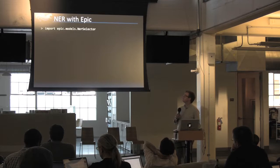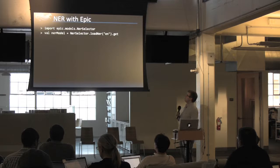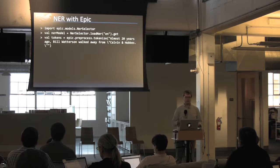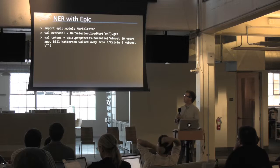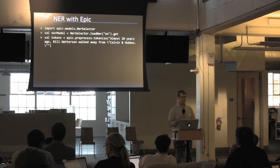First, you just import the NER selector tool, which is designed to let you select between multiple different languages. You can load the English model with just a simple line. You can then take some text and tokenize it into a representation that we understand. So for something like 'almost 20 years ago, Bill Watterson walked away from Calvin and Hobbes,' it converts the input string into a canonical representation, separating out punctuation, understanding opening and closing quotes, and so on.